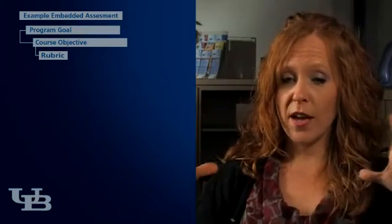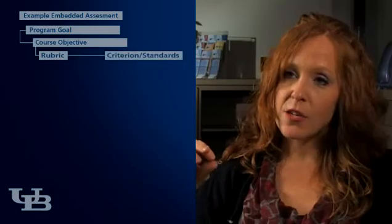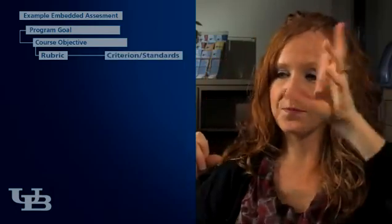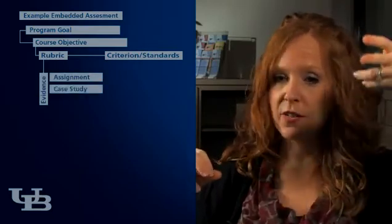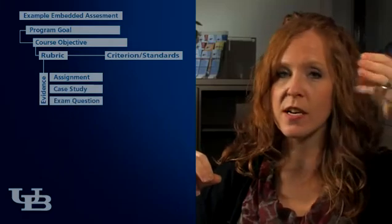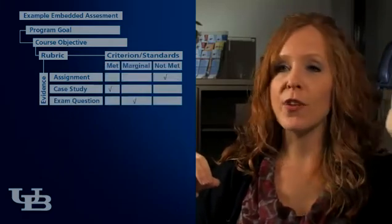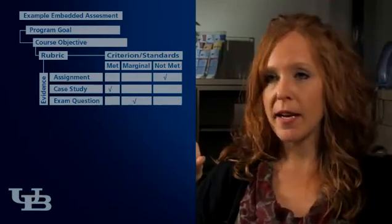When we have our rubrics that faculty members turn in, every objective has its own criteria – the different ways to measure it, which might include different levels of the course, homework assignments, case studies, final exam questions, down to the specific question level. The criteria indicate the percentage of whether students have met it, marginally met it, or have not met it. This rubric is essentially a chart: one column lists the various criteria used to evaluate a given assignment.